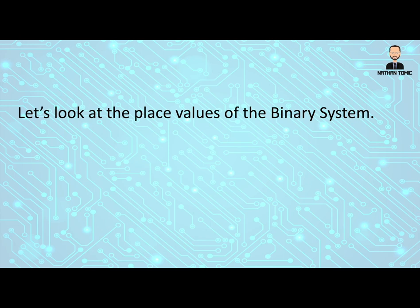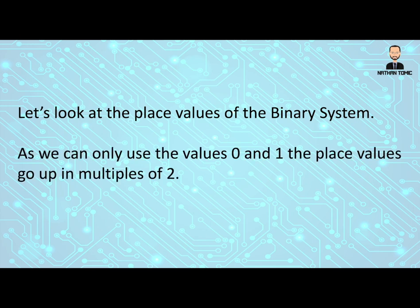So now let's have a look at the place values of the binary system. As we can only use the values 0 and 1, the place values go up in multiples of 2. So we often call this a base 2 numbering system.